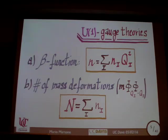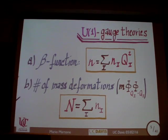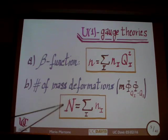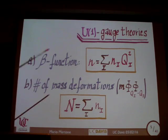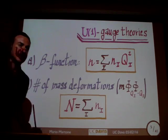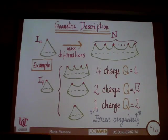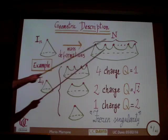Instead of using the N_i, Q_i basis for describing those theories, let's use two different numbers: little n and capital N. Little n is the value of the beta function, related to the charges Q_i. Capital N is the number of mass deformations — the mass terms you can write in the Lagrangian. For each pair of fields phi with charge Q_i and minus Q_i, you can write a mass term, so the total number of mass terms equals the number of pairs of fields. I will use heavily the geometry of the moduli space to classify these theories, and this little n and capital N is the right way of looking at things.